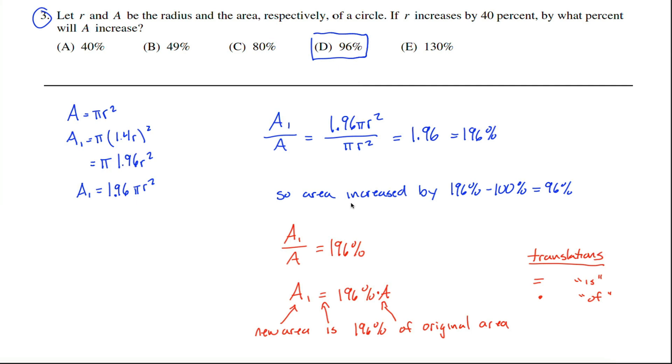When you're interested in the percentage by which something increased, you have to make sure you subtract off the original 100%. One other option I want to give you to solve this problem, maybe not necessary, but just in case it helps anybody. Since they don't define the original radius or area, implied in this question is that no matter what their original radius and area are, if we increase the radius by 40%, the area is going to increase by the same amount. What that means is we can choose whatever the hell we want R and A to be equal to as long as they satisfy this equation here.